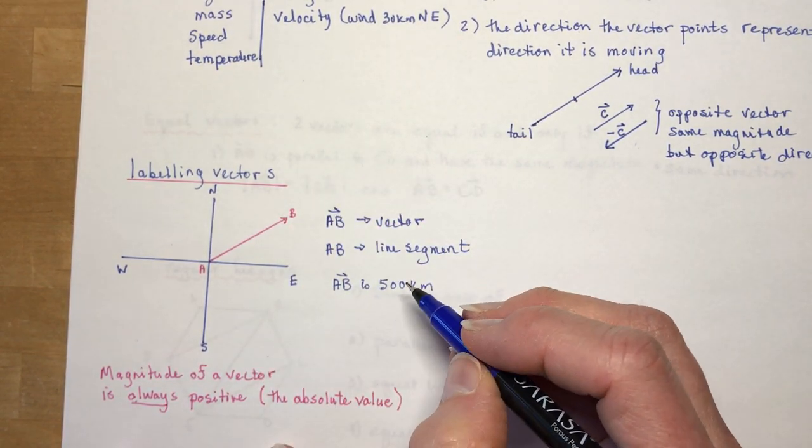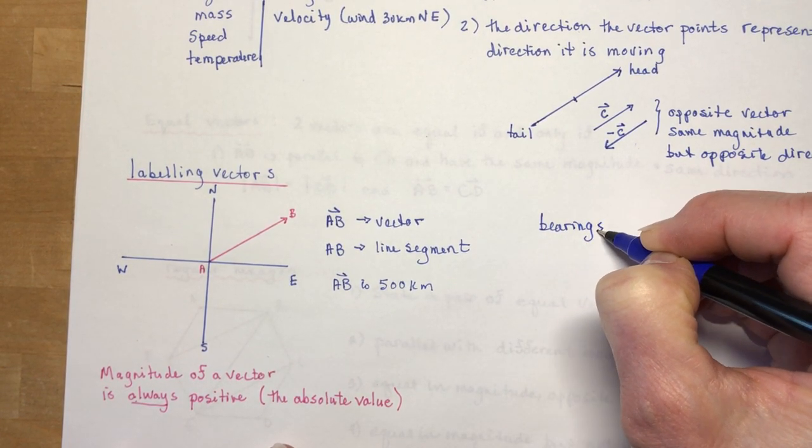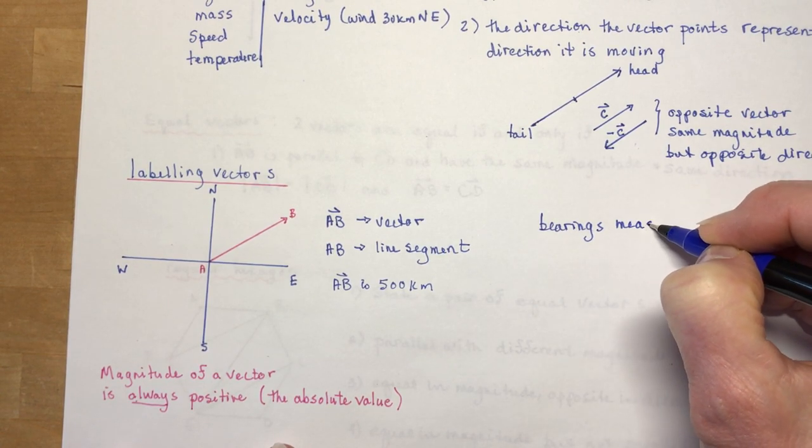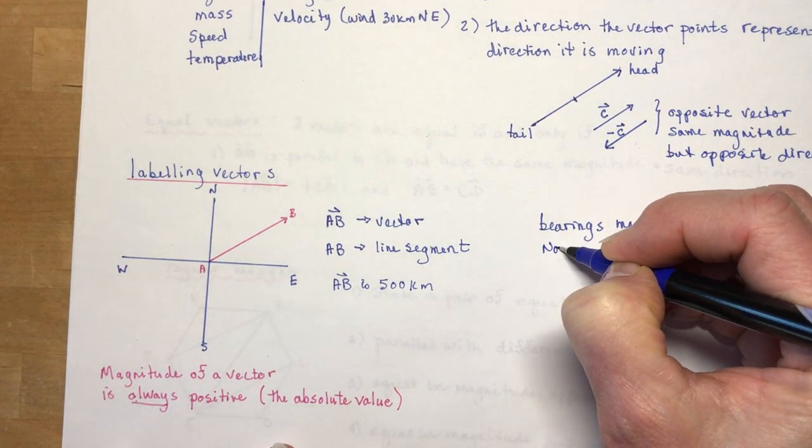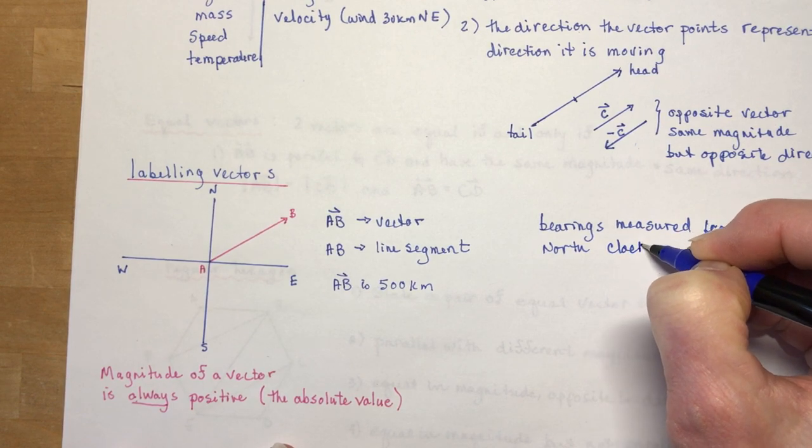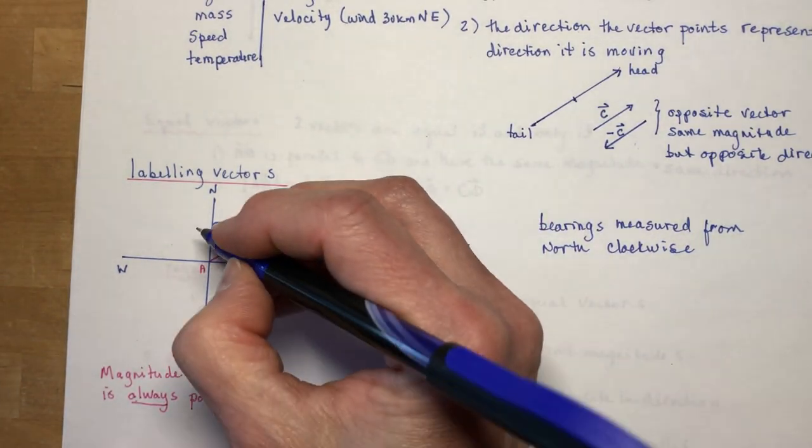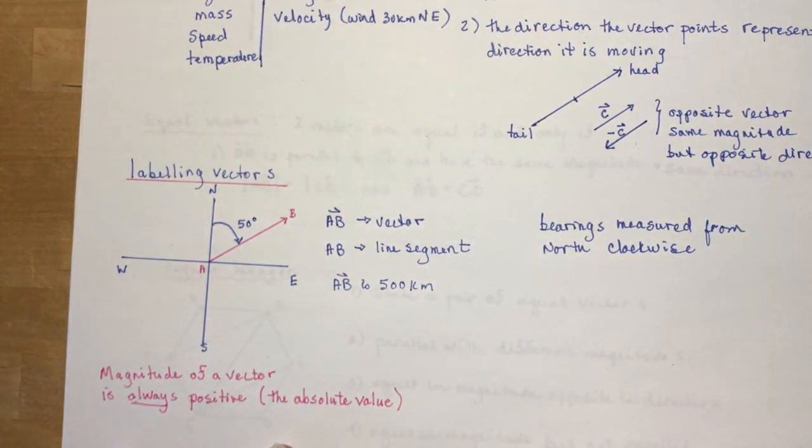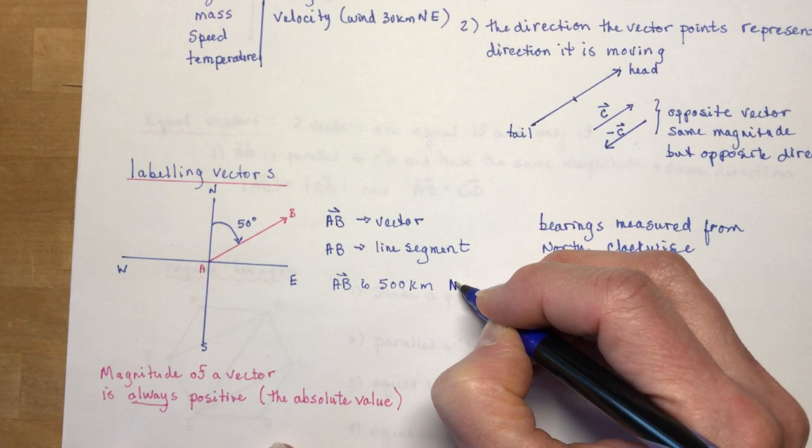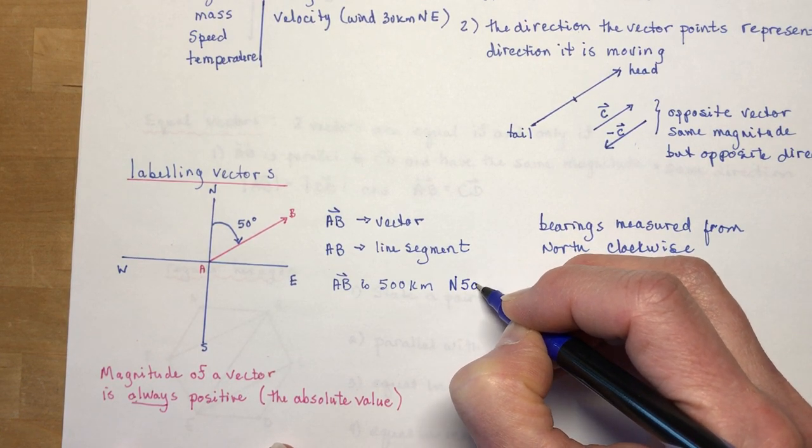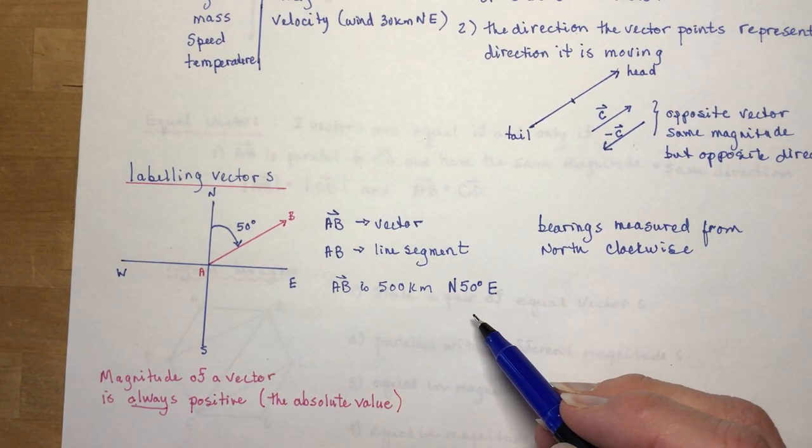So when you do bearings, now you did bearings in grade 11, bearings are always measured from the north, measured from north and in a clockwise direction. So north and clockwise. So if I wanted to know how far it is from here to here, let's say that was probably about 50 degrees, we'd say AB is 500 kilometers north, we say the direction first, north 50 degrees east. And that would be a very nice description of your vector.